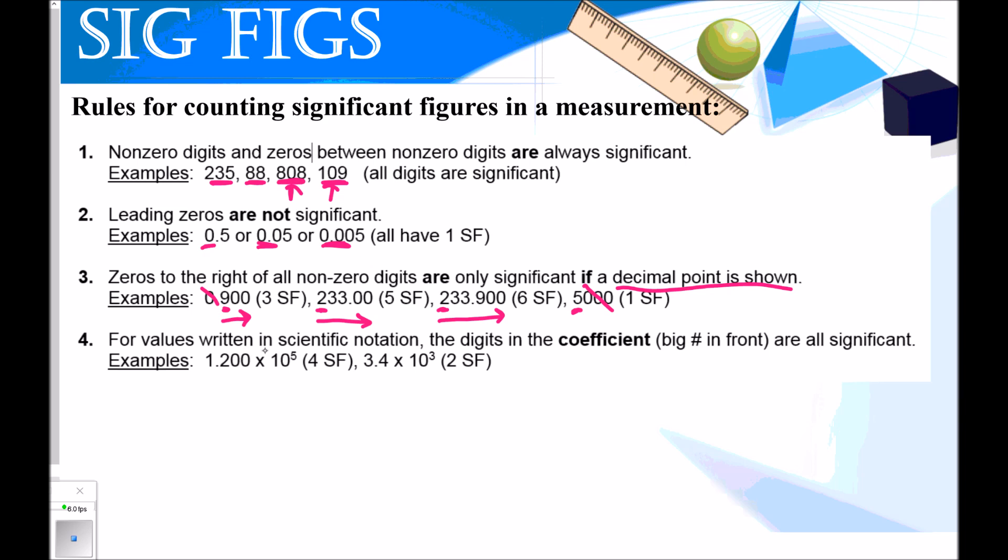For values written in scientific notation, this is our fourth and very last rule. Digits in the coefficient, meaning the big number in front, are all significant. So the numbers in front of the times 10 are significant. I'm going to put a little star next to this rule because even though it's the easiest one, it is the most forgotten one. So these are four numbers, four significant figures. Two numbers, two significant figures. You don't even have to look at the times 10 in order to know how many digits are significant here.